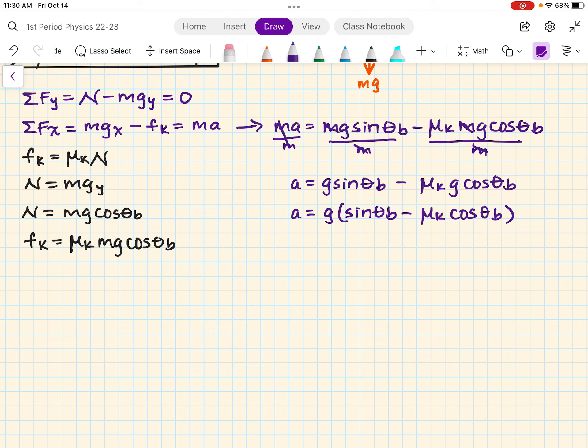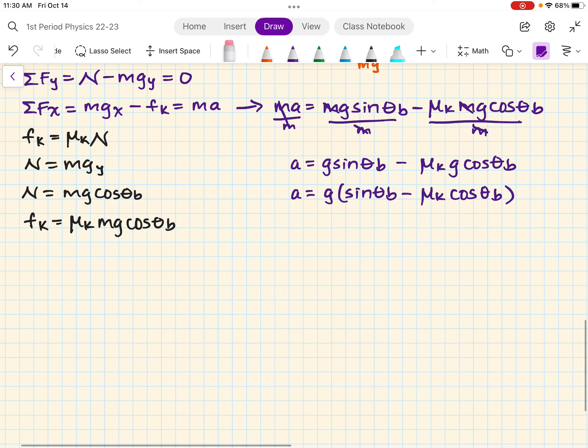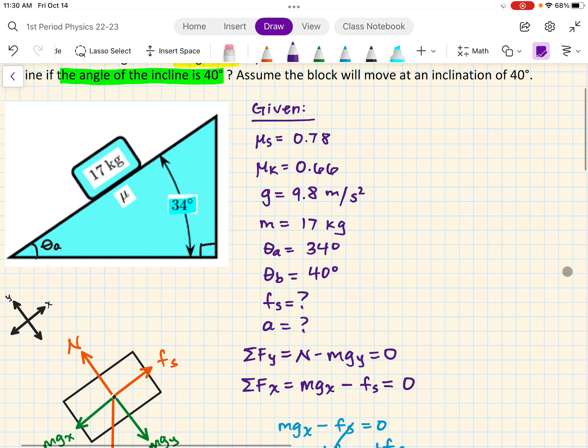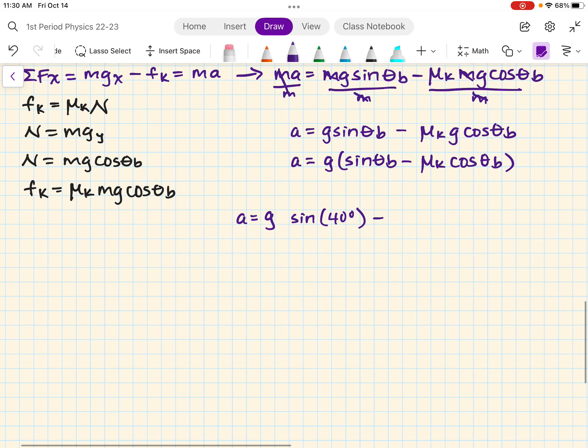We can now plug in our numbers. So I have acceleration is equal to, I'm getting more space. So, acceleration is equal to g. I think I'm going to have to use brackets, so I will add them at the end, okay? Yeah, I'm going to have to use brackets. So sine theta b is 40 degrees minus coefficient of kinetic friction. I don't remember what it is. That one is, here we go, 0.66. So 0.66 times the cosine of 40 degrees. Wait. I was supposed to use 9.8 here. My bad.